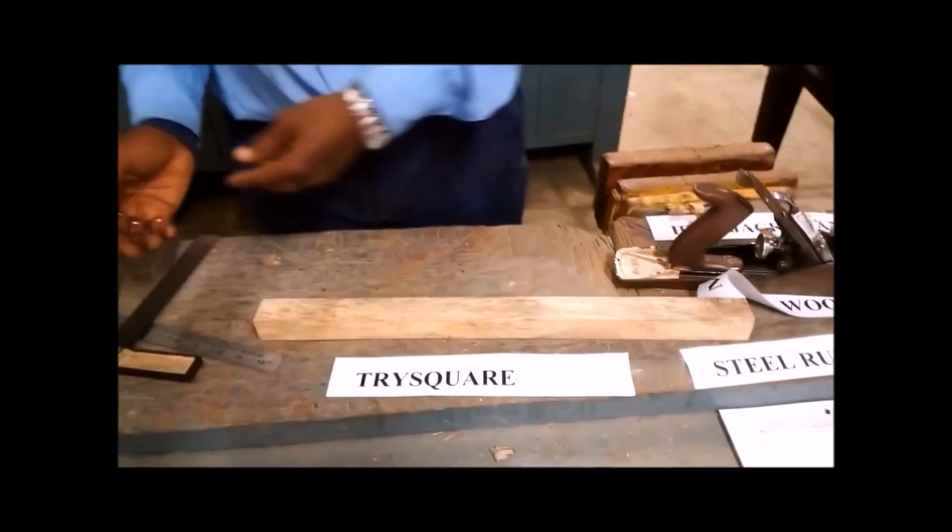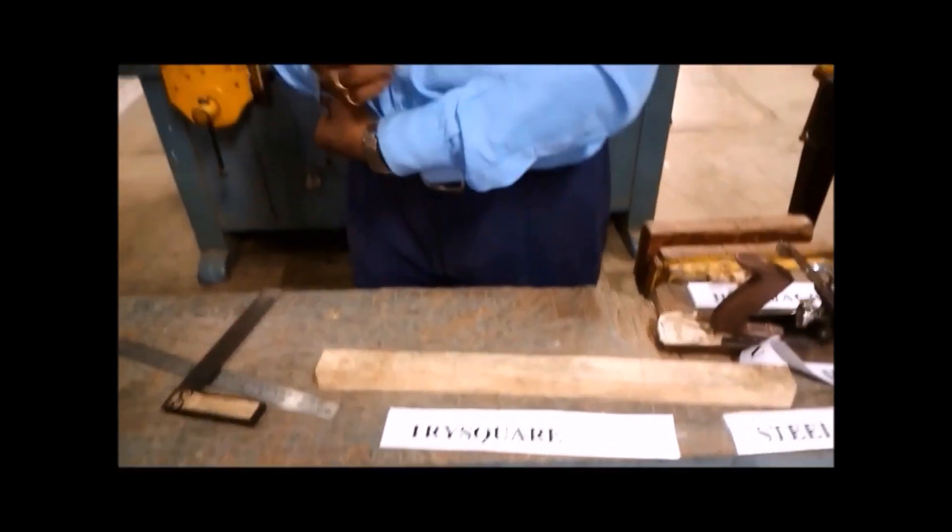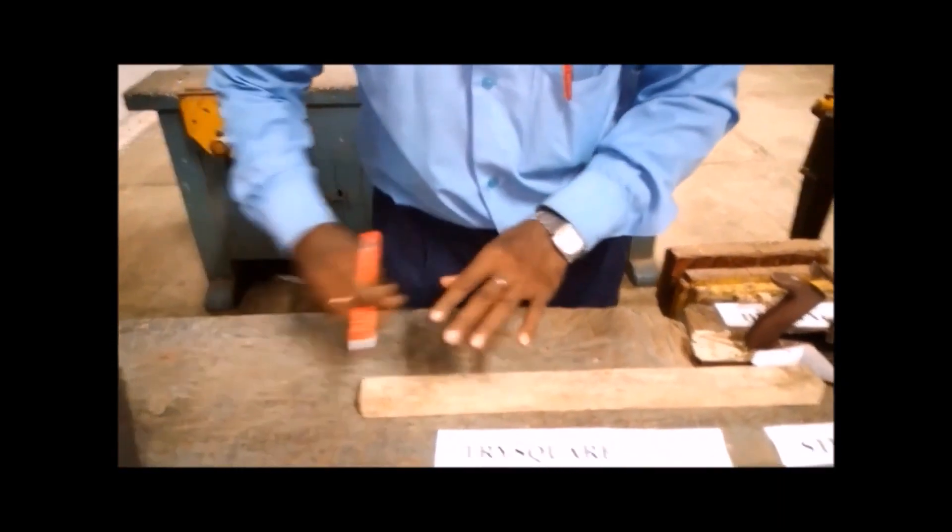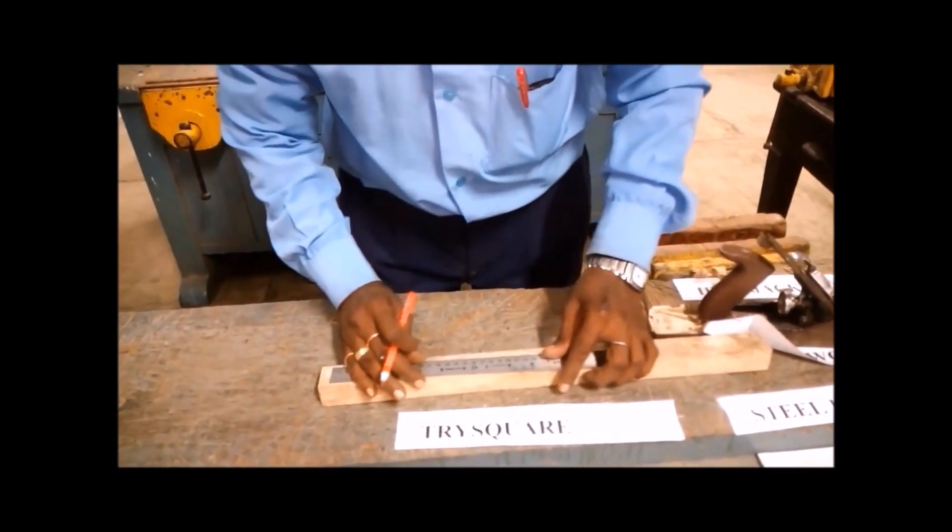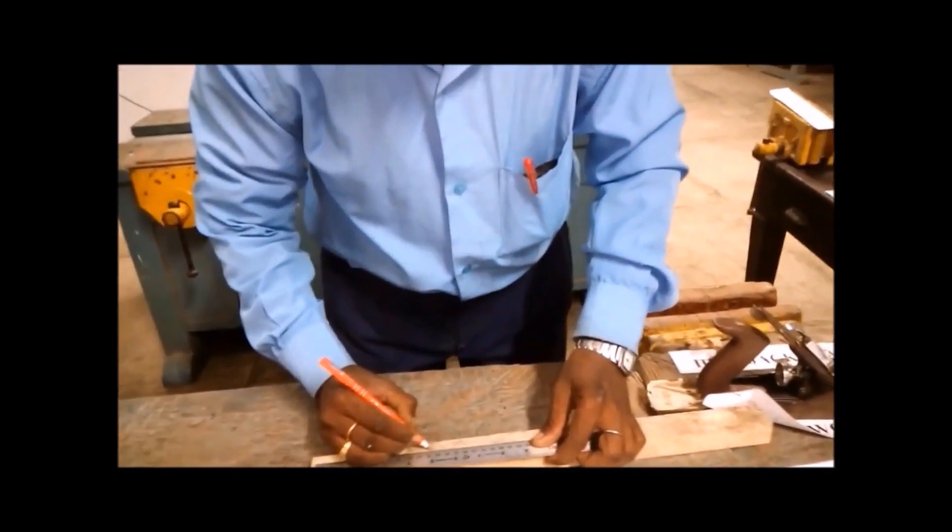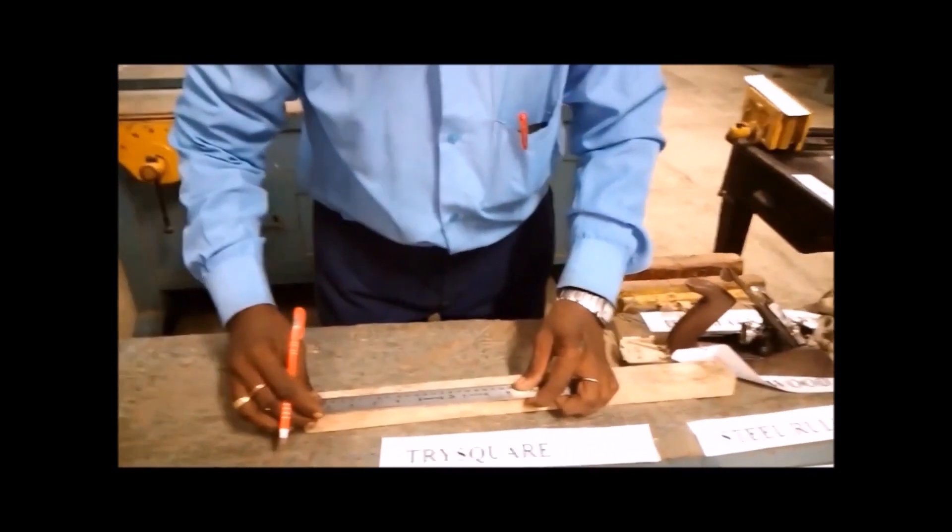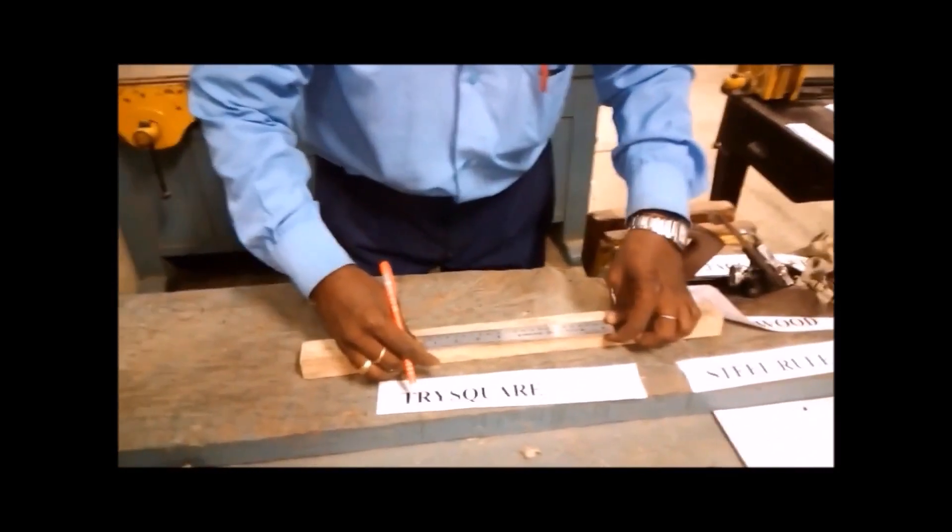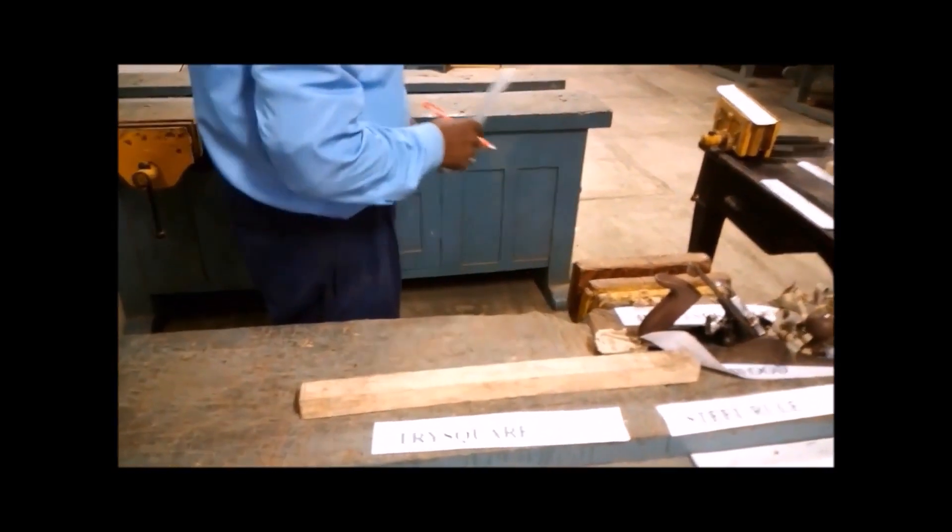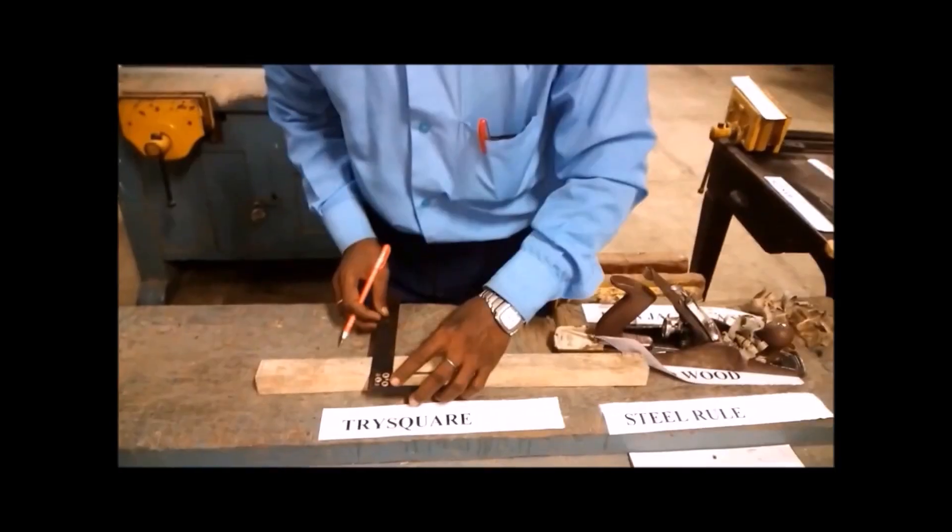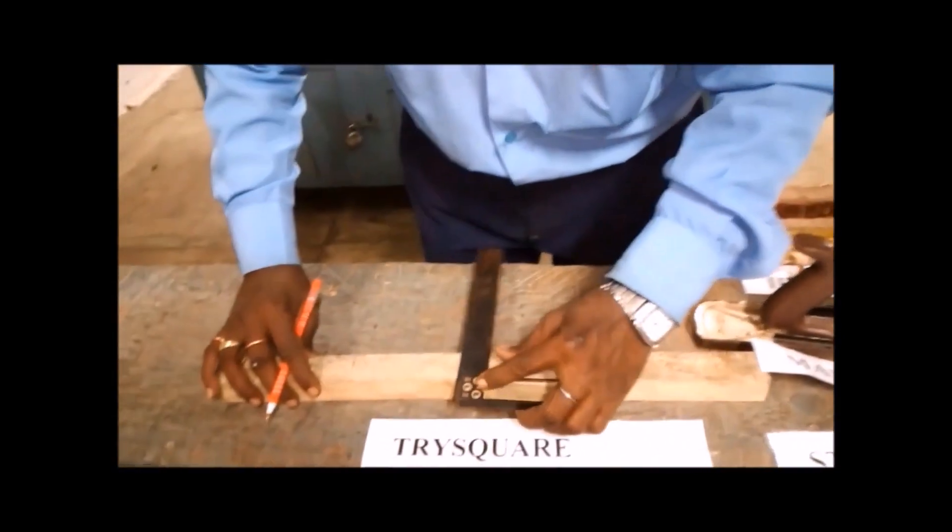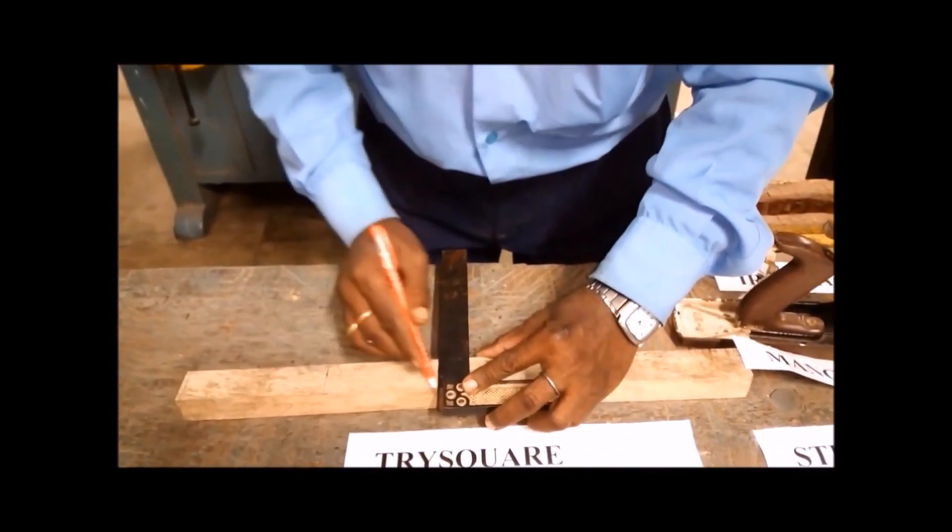Marking the dimensions required for the tenon member and mortise member with the help of tri-square and pen. First part 125 mm for mortise and second part 100 mm length for tenon are marked.